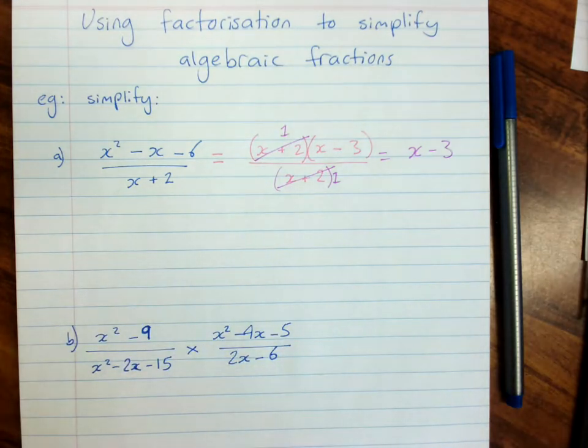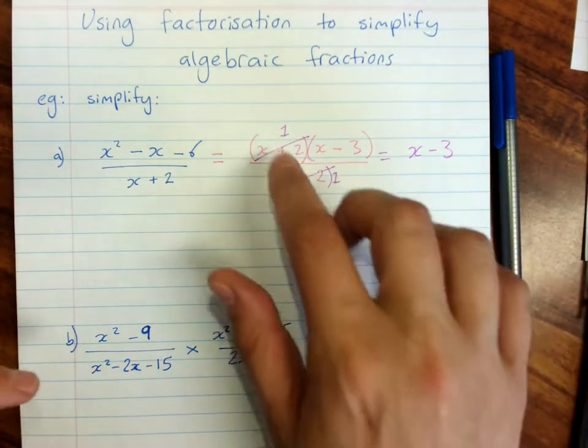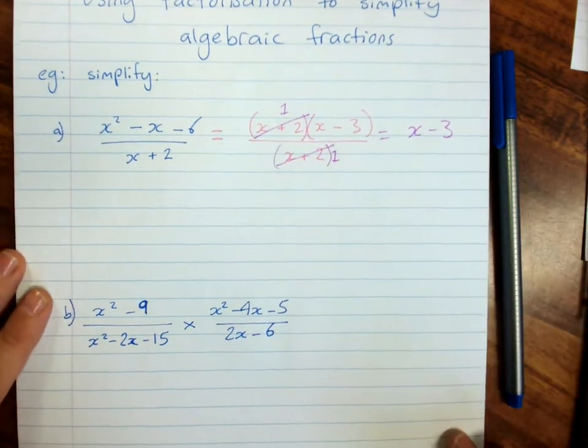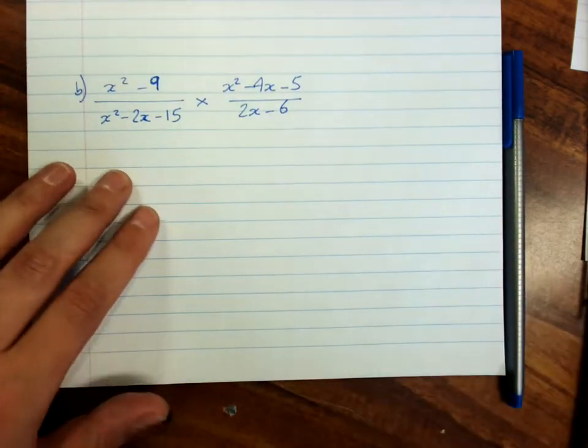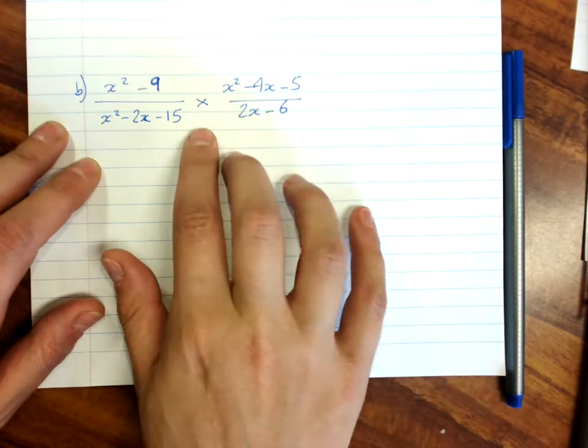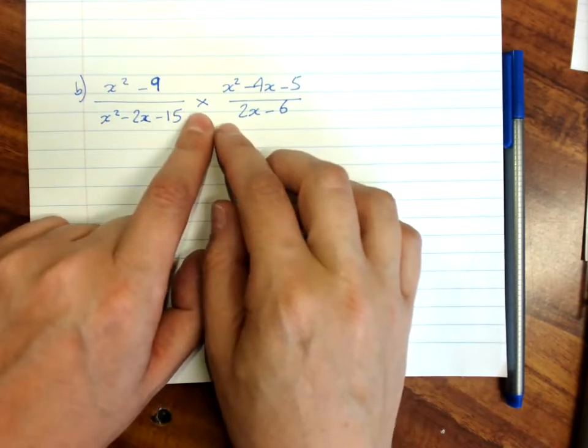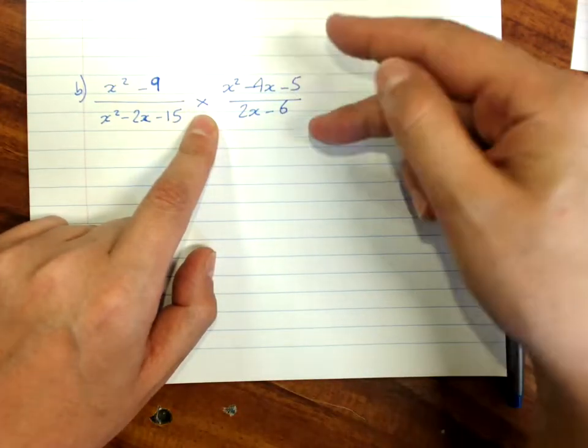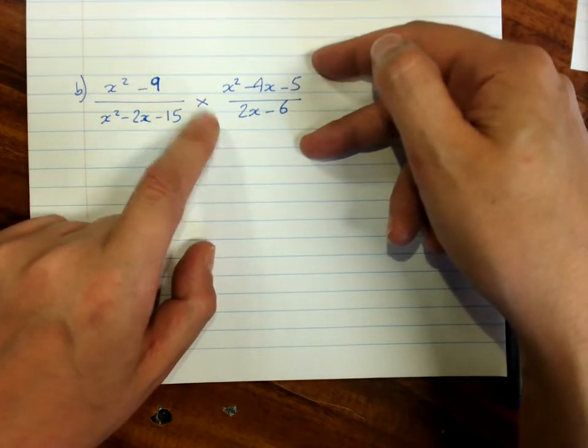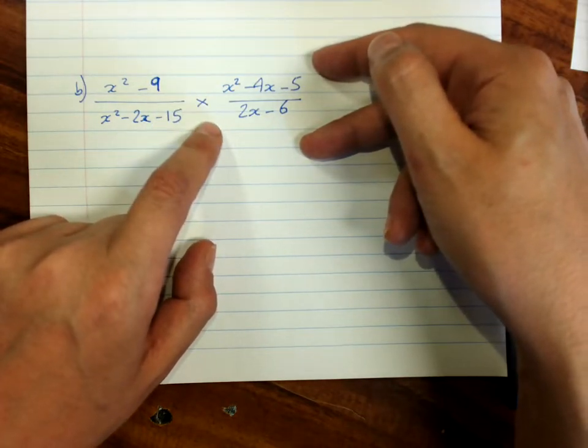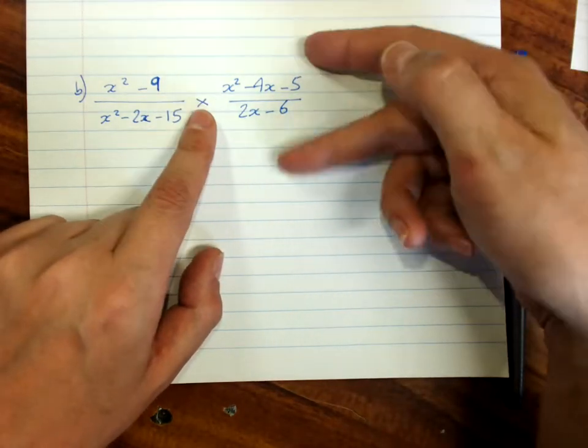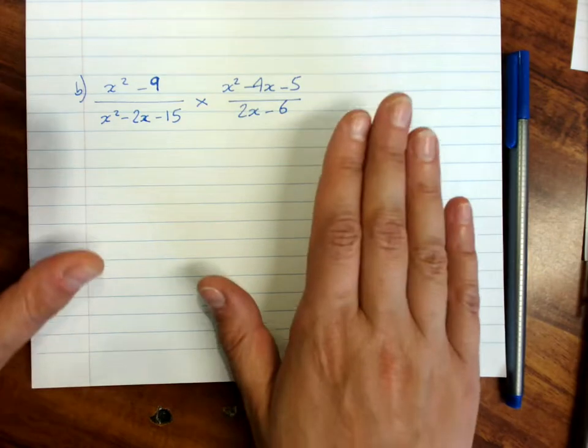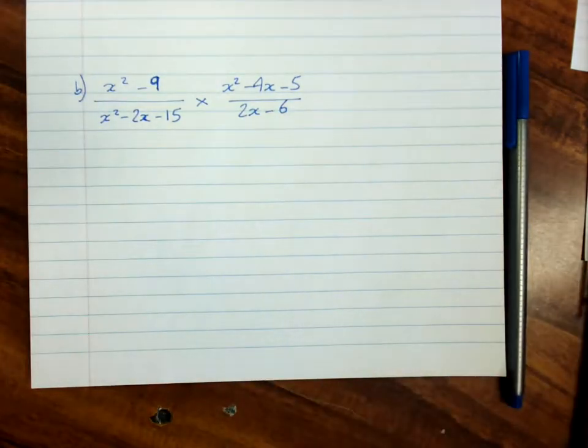So by factorizing our expressions we can find a common factor that we can cancel and simplify our fraction. This one here. Now I chose a multiplication. If this was a division the first thing you would do is flip that second fraction and make this a multiplication. So you remember about multiplying and dividing fractions? If you're dividing it's the same as multiplying by the reciprocal. But at the moment we have this. Let us factorize.